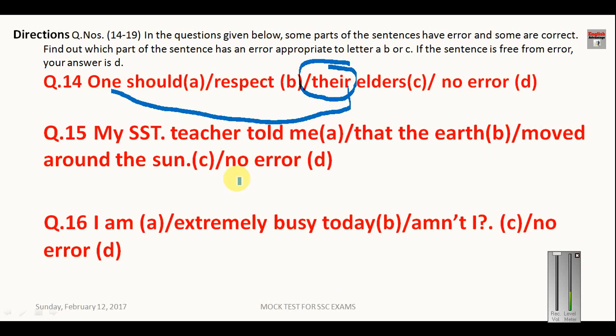My SST teacher told me that the earth moved around the sun. So this moved is wrong, because here we are talking about the universal truth. And in universal truth we always use the first form of the verb. So here your answer will be C.